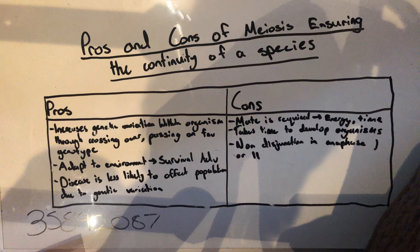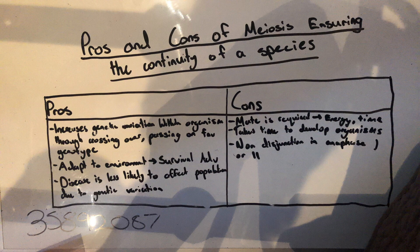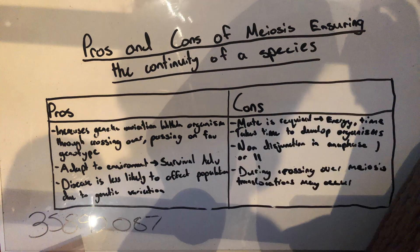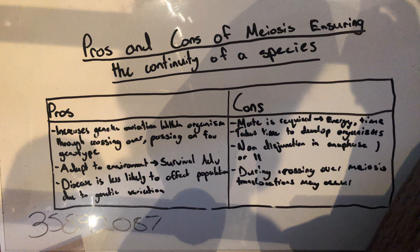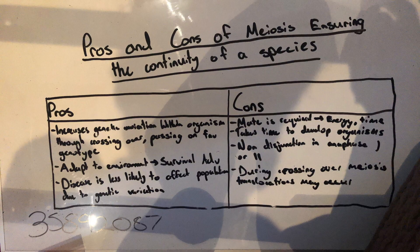During meiosis, non-disjunction can occur in anaphase 1 or 2, leading to daughter cells being aneuploid, where one has N plus 1 chromosomes and the other with N minus 1 chromosomes. During the crossing over phase of meiosis, translocations can occur, where a chromosome is broken during meiosis, resulting in a fragment becoming joined to another chromosome.